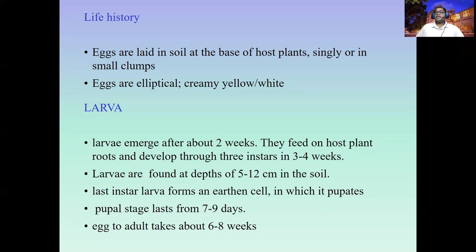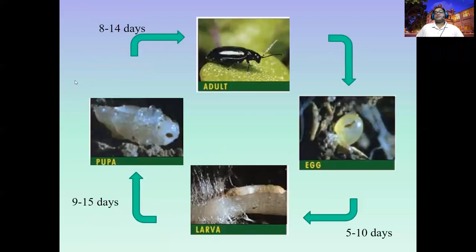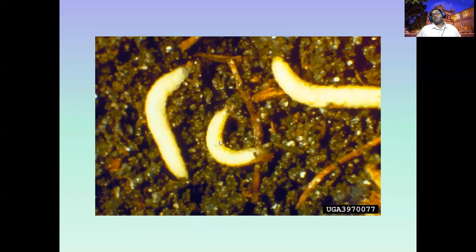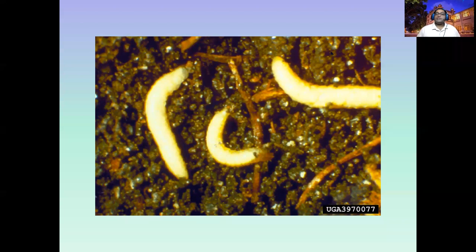The pupal stage is nearly about ten days, and from egg to adult it takes about two months total. If you observe flea beetles in the field, you can take a soil sample and find many white, legless larvae inside. The larvae are feeding on roots while adults are feeding on leaves; therefore, young seedlings show wilting symptoms because root connections are cut.